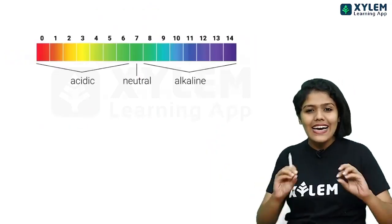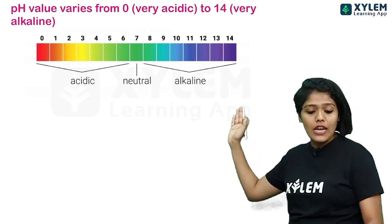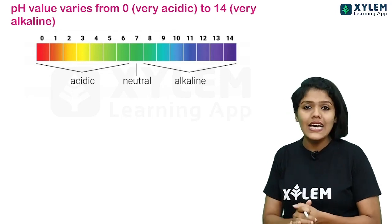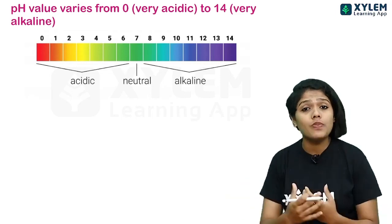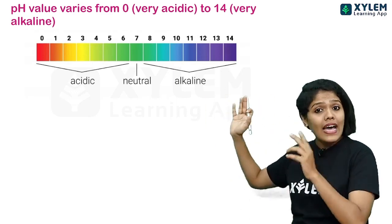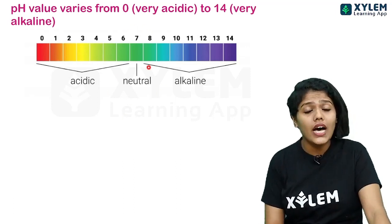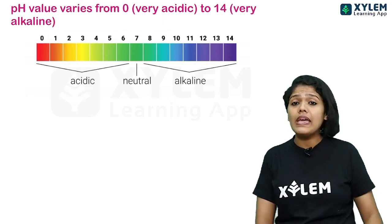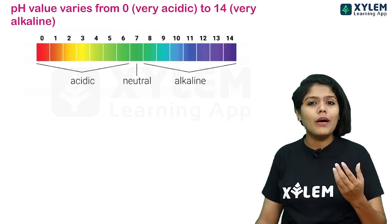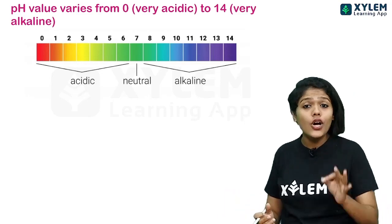Here you can see different colors. The pH value ranges from 0 to 14. The 14 values correspond to different colors, each according to the H+ ion concentration. Now observe value number 7 — it is neutral. Neutral means it shows no acidic or basic character. For example, pure water is neither acidic nor basic — it is a neutral solution.